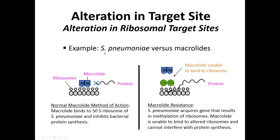Another example of changing the lock is methylation at the ribosome. Macrolides like azithromycin bind to the 50S ribosome to stop protein synthesis. However, if a methyl group is added to the ribosome, the macrolide can no longer bind — that's how the pneumococcus becomes resistant to azithromycin and clarithromycin.